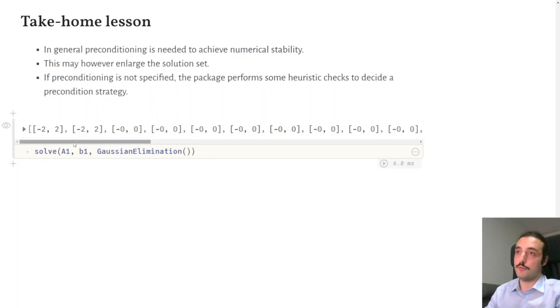If we take the example from before, we see that if we don't specify the preconditioning, the solver notices that for this kind of matrix I might have numerical issues and so I use preconditioning. And without specifying it, we get the correct answer.